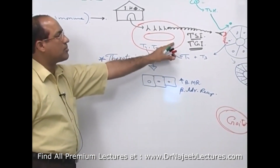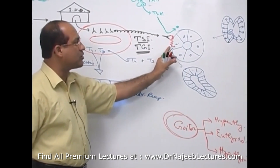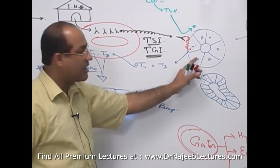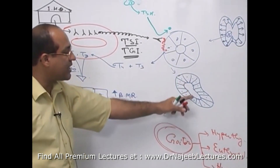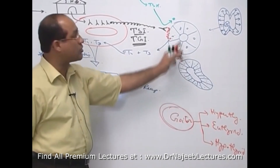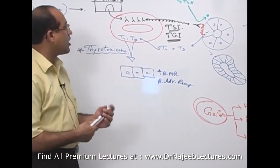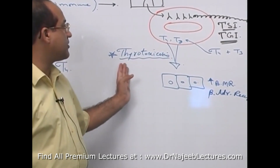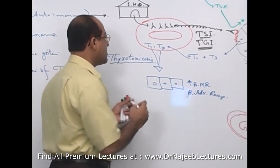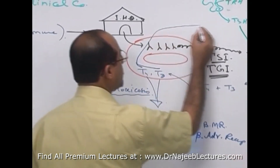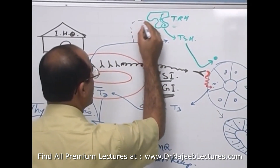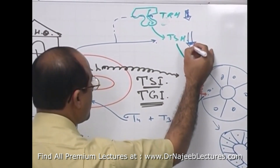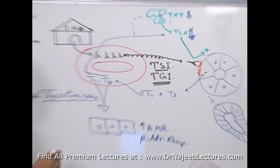To recap: the immune system overstimulates thyroid tissue via autoantibodies, leading to cells becoming columnar, increased number of cells per follicle, increased total follicles, and increased gland size — diffuse goiter. Massive amounts of T3 and T4 are produced, which creates a negative feedback that suppresses TRH and TSH. So in Graves' disease patients, circulating TRH and TSH levels are both low.